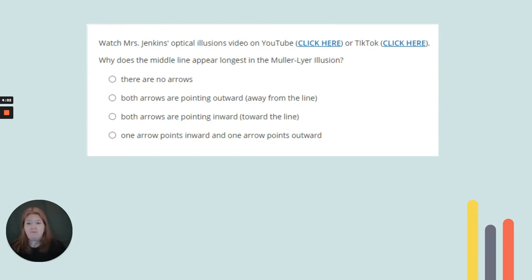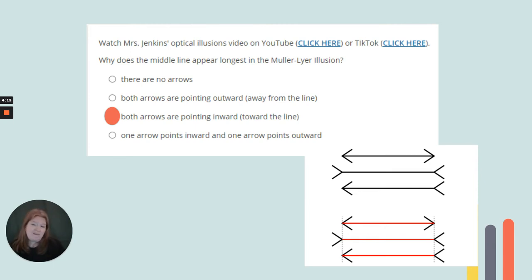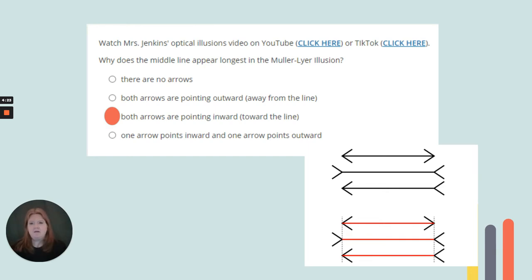Here's a question that a lot of people got wrong — it had to do with the Mueller-Lyer illusion. You can see that the lines appear different lengths, but clearly when they're highlighted in red, you can see they are the same length. Why do they appear different lengths? Because of the arrows. When the arrows point in toward the line, it gives the illusion that the line is longer.